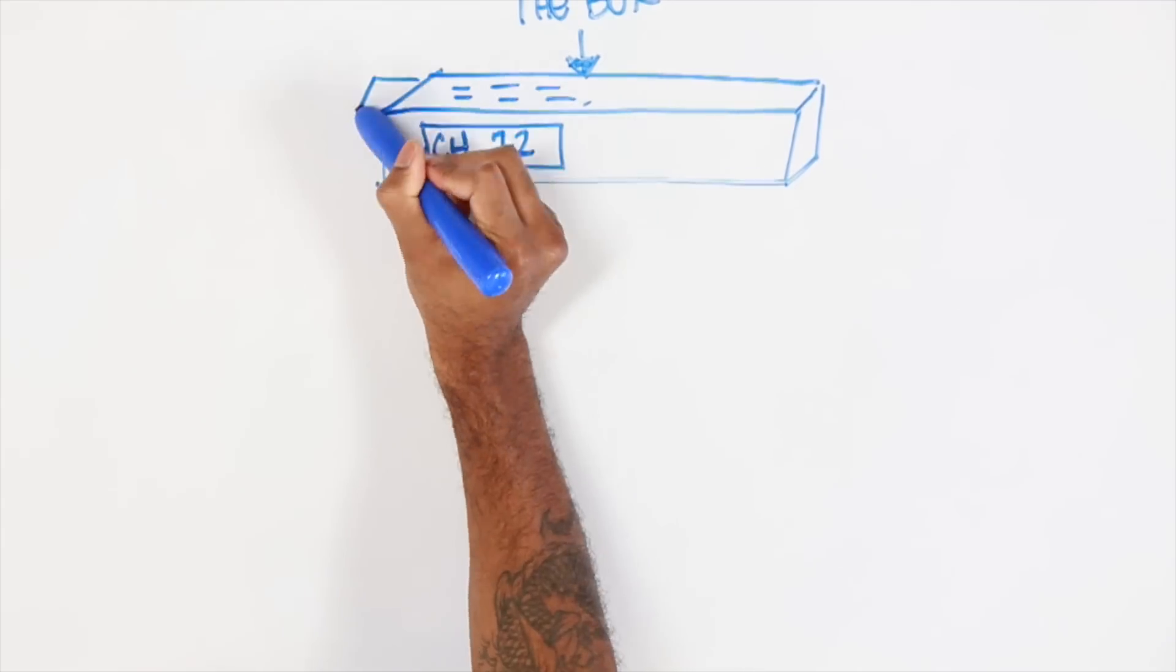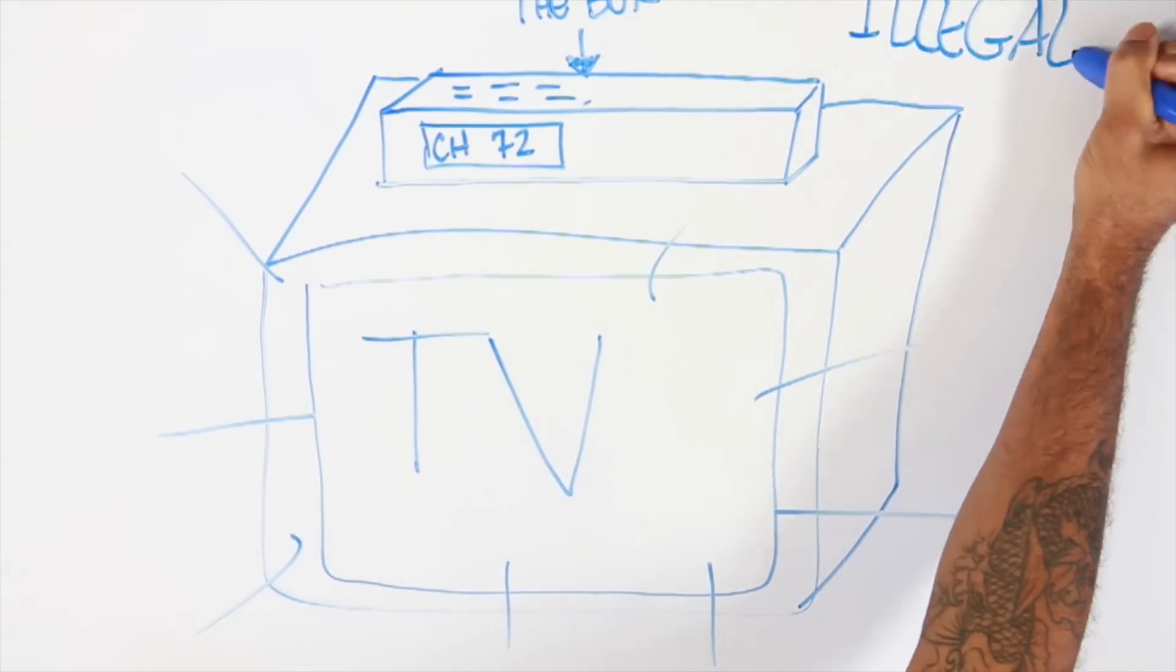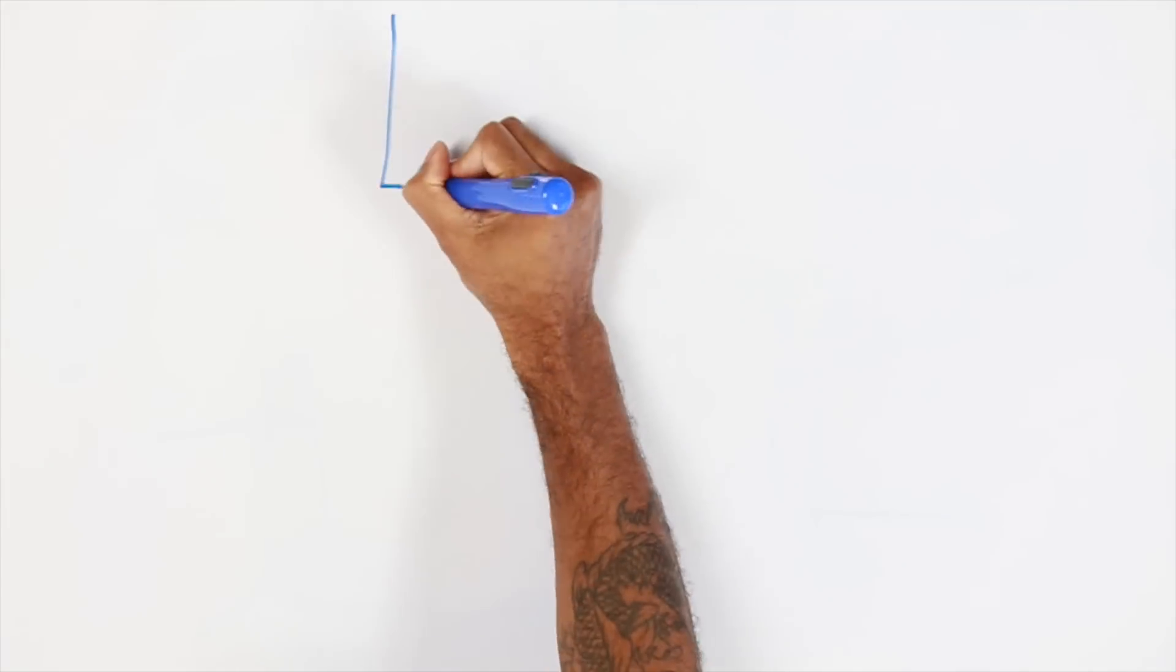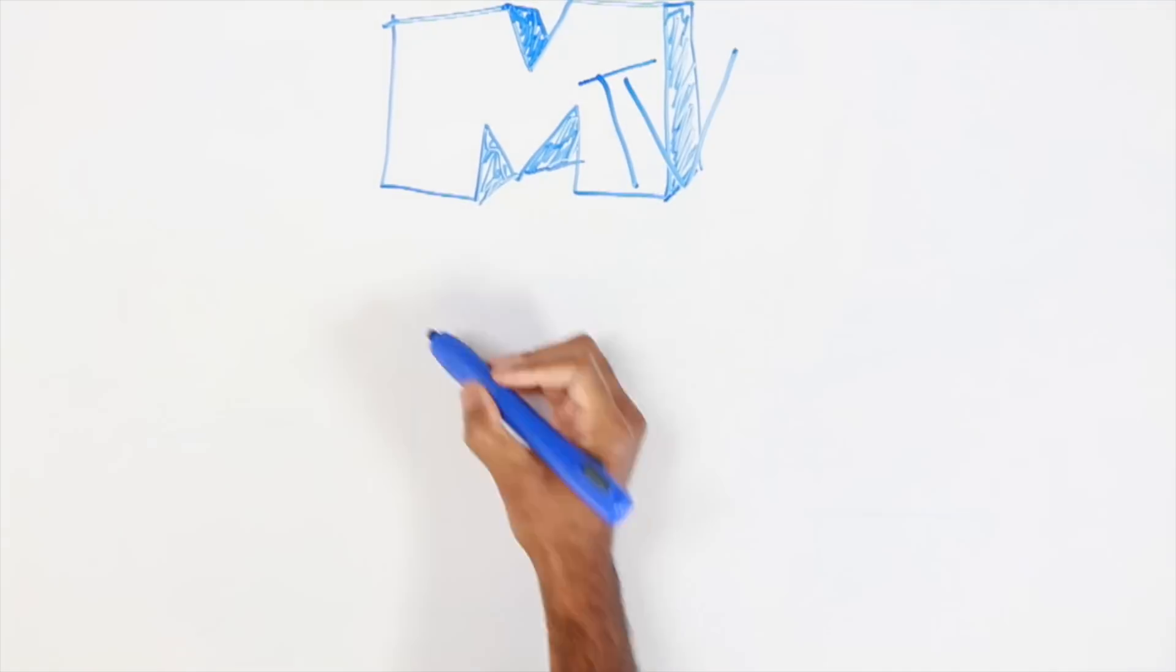At the time, we had just got this, I don't know back then if y'all knew what the box was. The box was this thing you used to put on your TV, and it was illegal. But me and my mom, we had it. We just got this box, and it came with every channel. It had all the cable channels, HBO, the movie channels, and everything.